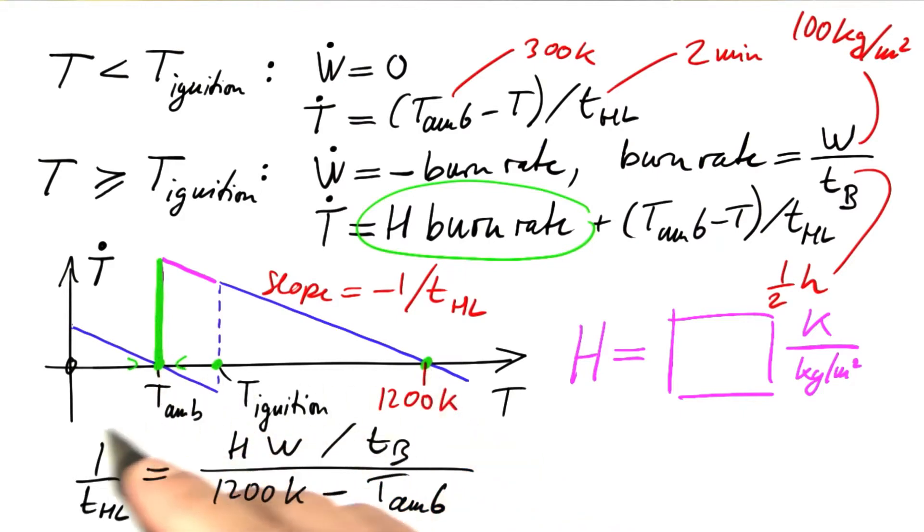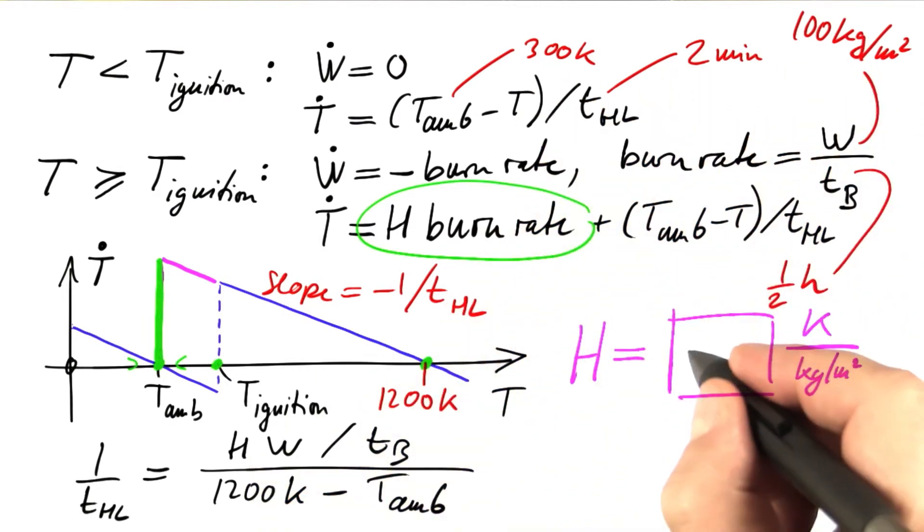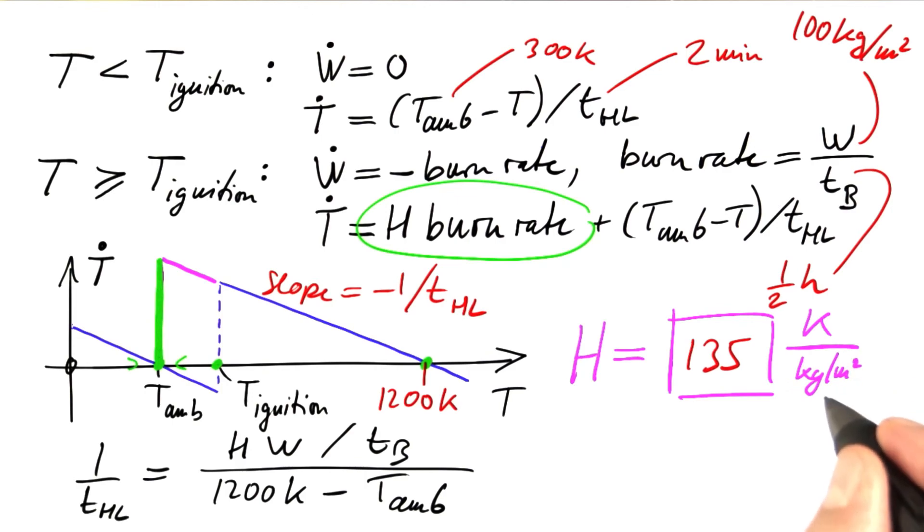Now you solve this equation for h, plug in these numbers, and then you get 135 Kelvin per kilogram per square meter.